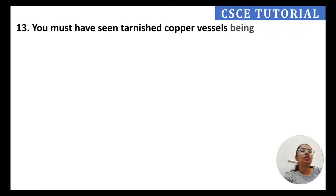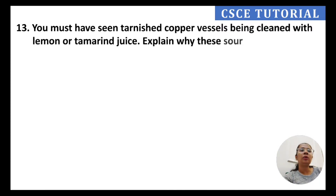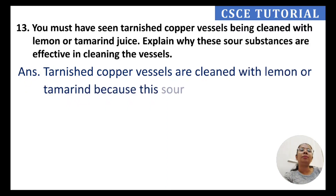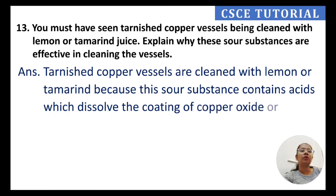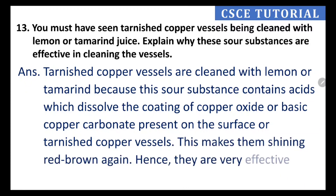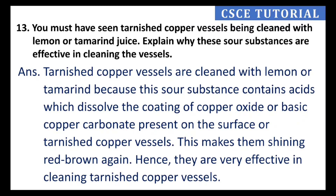Question 13: Tarnished copper vessels are cleaned with lemon or tamarind juice because these sour substances contain acid, which dissolves the coating of copper oxide and basic copper carbonate present on the surface. This makes the vessels shining red-brown again, which is why lemon and tamarind are very effective in cleaning tarnished copper vessels.